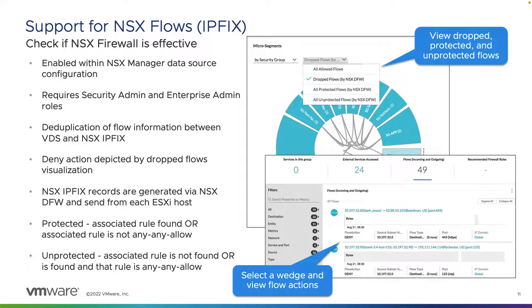We also support NSX flows. The flow ingestion coming into vRealize Network Insight can come from the virtual distributed switch, the NSX distributed firewall (which provides IPFIX data), or from third-party top-of-rack switches, firewalls, load balancers, and so on — we can ingest all three. Because NSX distributed firewalls attach to every virtual machine in the infrastructure, including Kubernetes, it allows us to see flows as close as possible to the actual workload without using any agents.